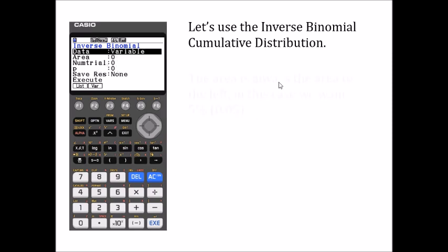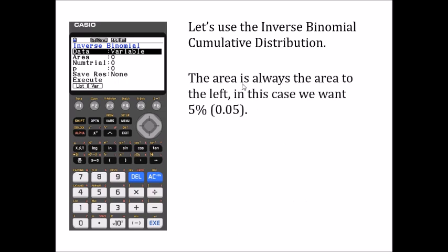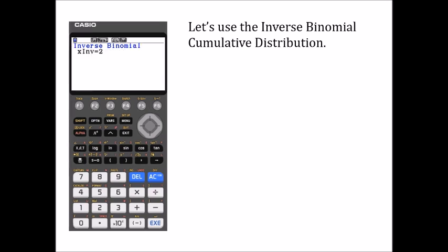Note that the area the calculator asks for is always the area to the left. Our tail was to the left — we wanted the probabilities on the left to add up to less than 5%, so less than 0.05. We put area as 0.05, number of trials as 20, and p as a quarter. Press execute and it should give you the value of 2, saying the probability that x is less than or equal to 2 is about 0.05.